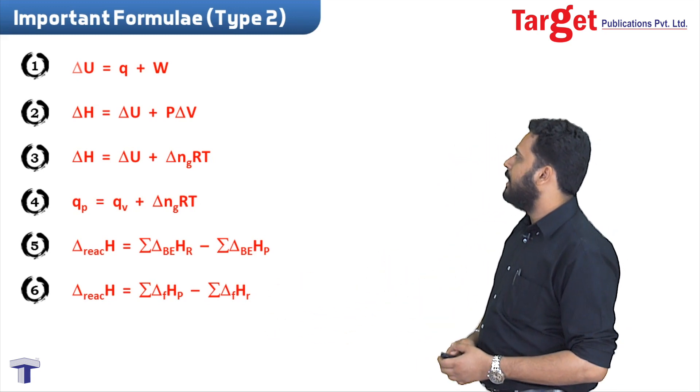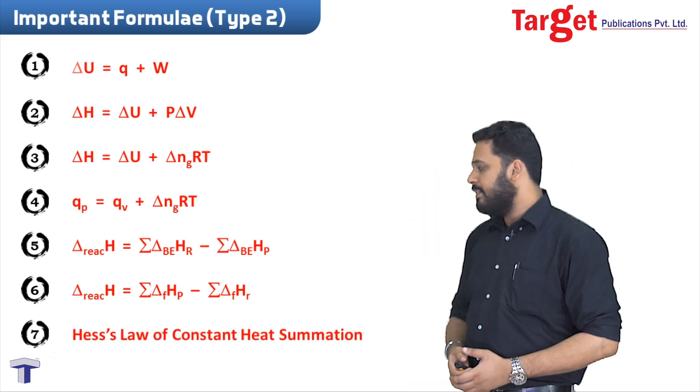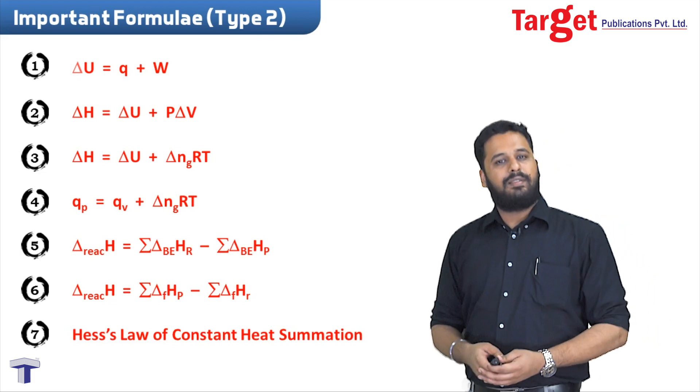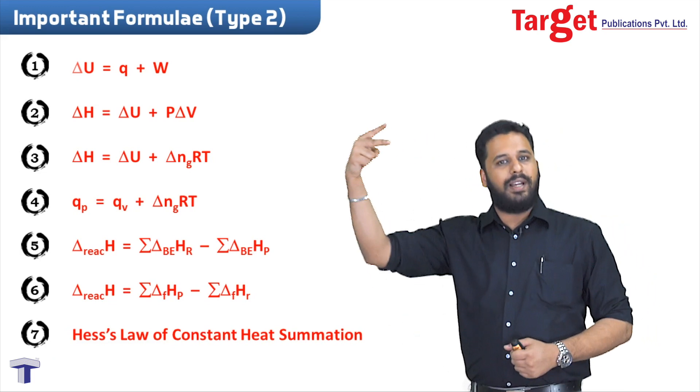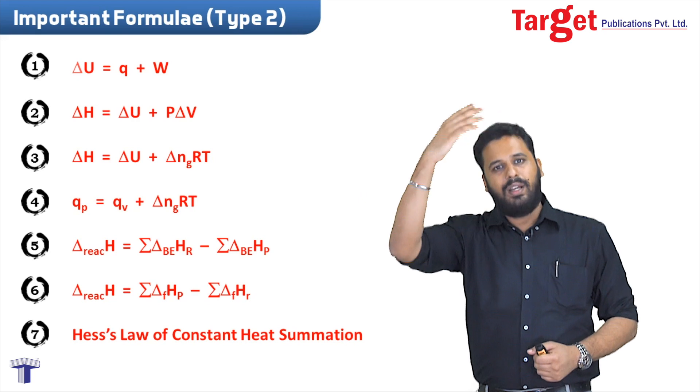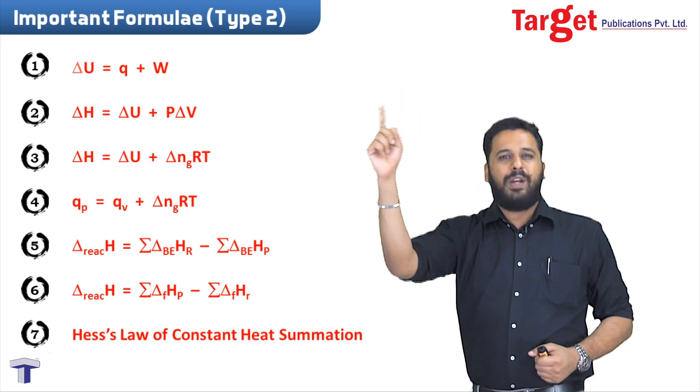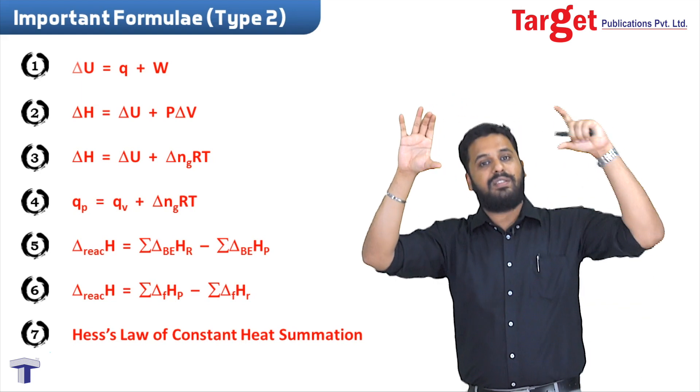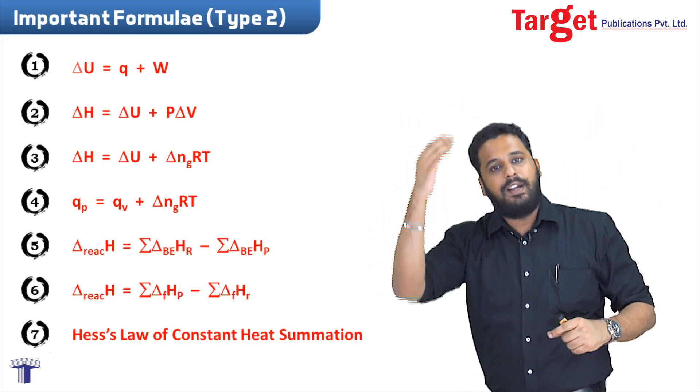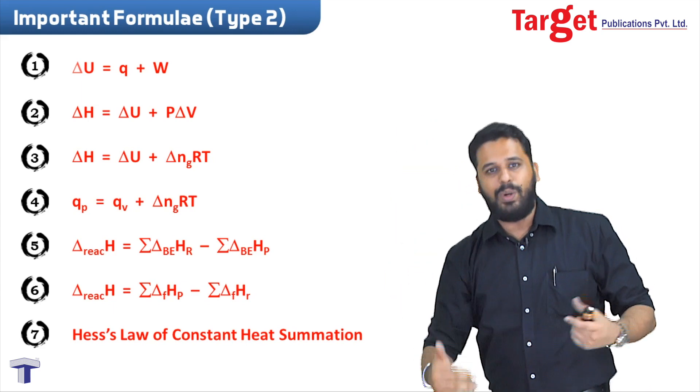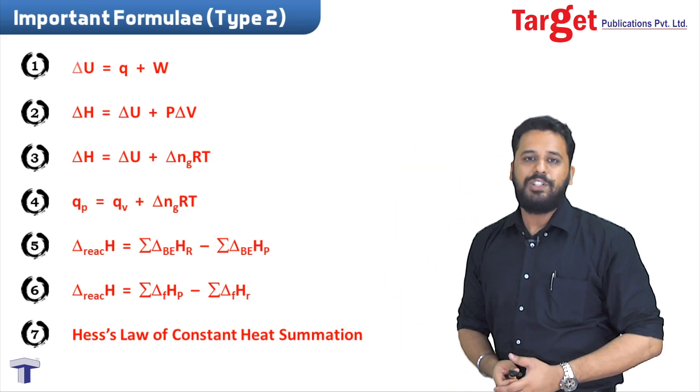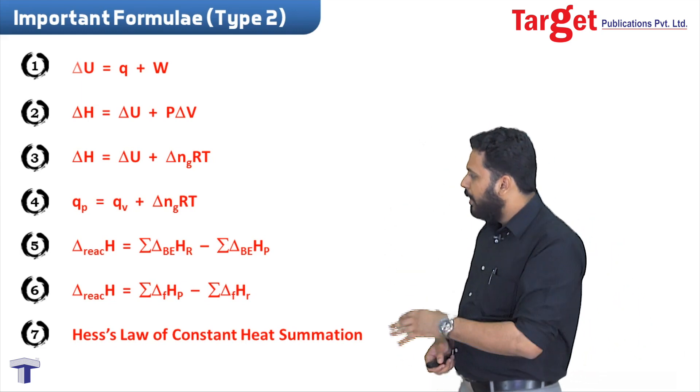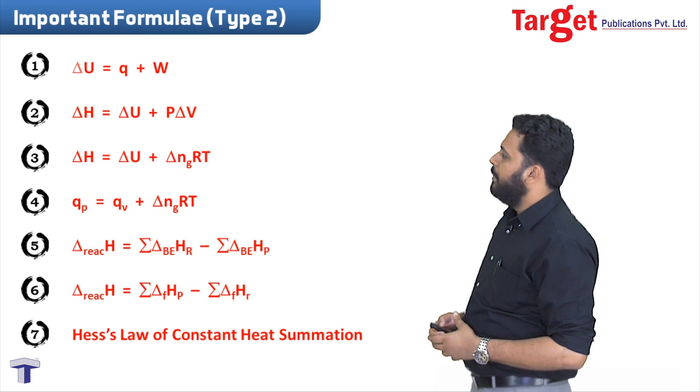The last type of sum asked from enthalpy is Hess's law of constant heat summation. For this you don't need to memorize any formula. You just need to see what the given equations are, what their delta H values are, which equation you need, make whatever changes you have to make in the given equations, make the same changes in the delta H value, and finally when you get your required equation you will also get your required delta H value. Very simple sums to solve.